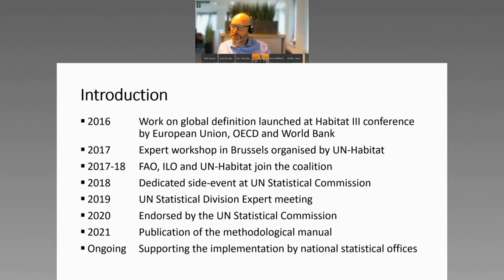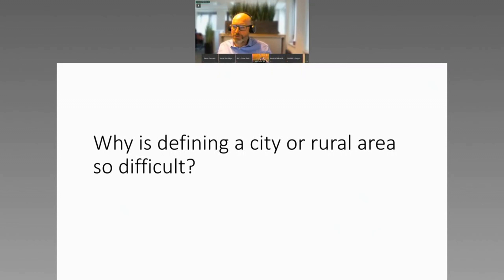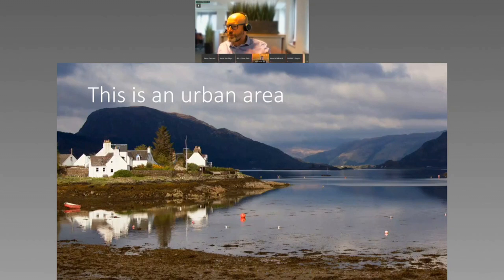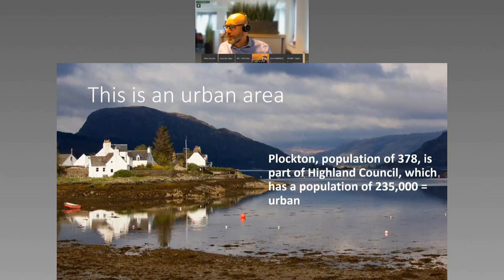Why did we do it and why was it so hard? It's surprising that you have to wait for the 21st century to agree on what's urban and rural. If you look at this place, this is an urban area if you purely define them based on population size, because this Plakton only has a small population but it's part of a larger municipality, Highland Council, which has over 200,000 inhabitants. So you would guess that must be urban.